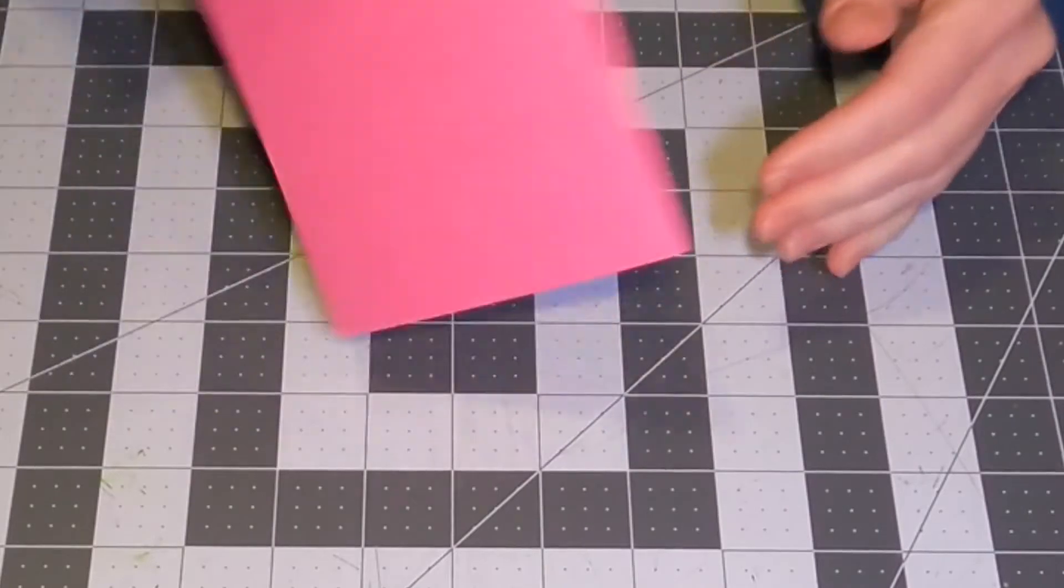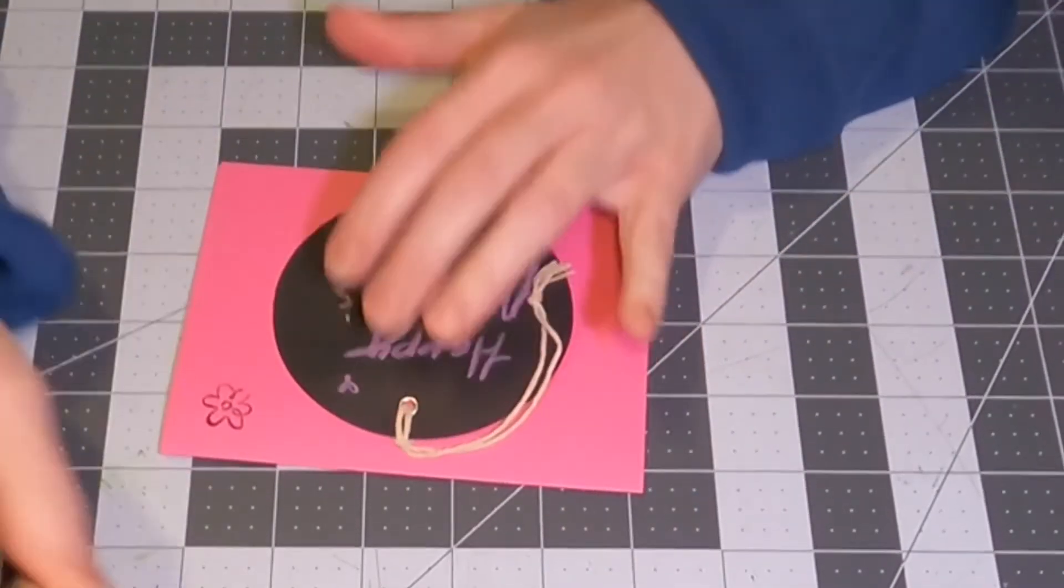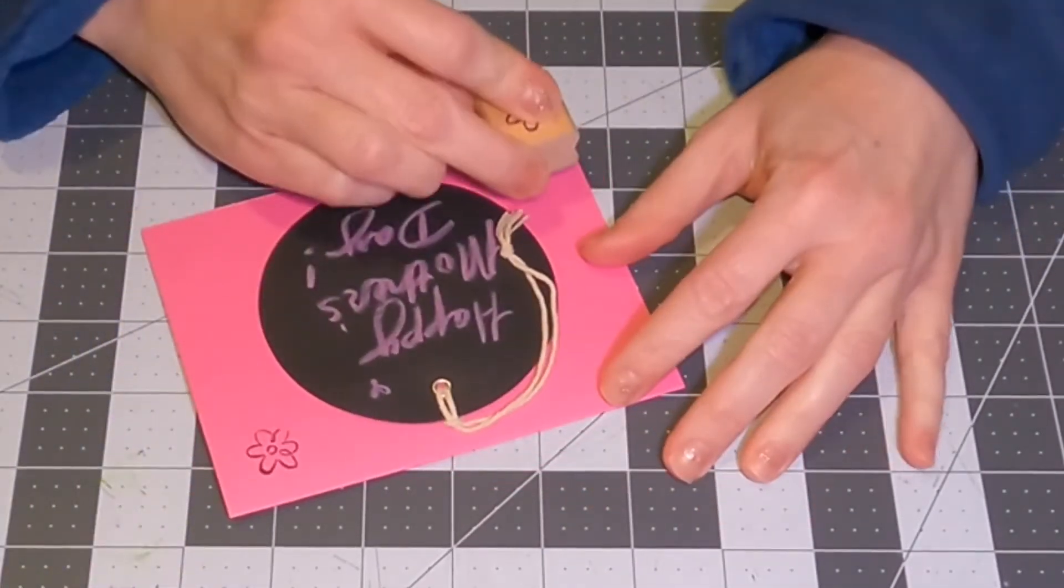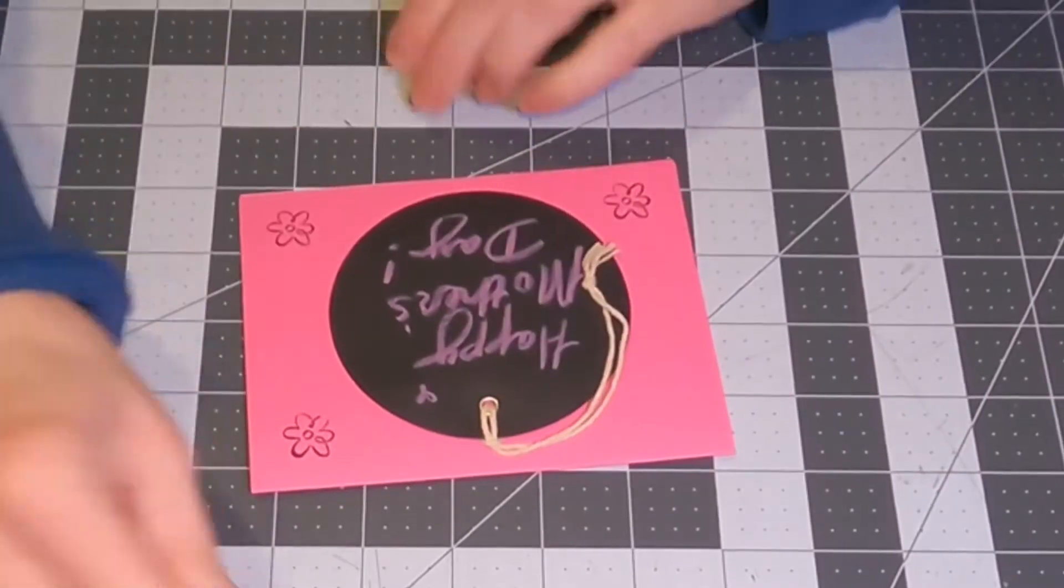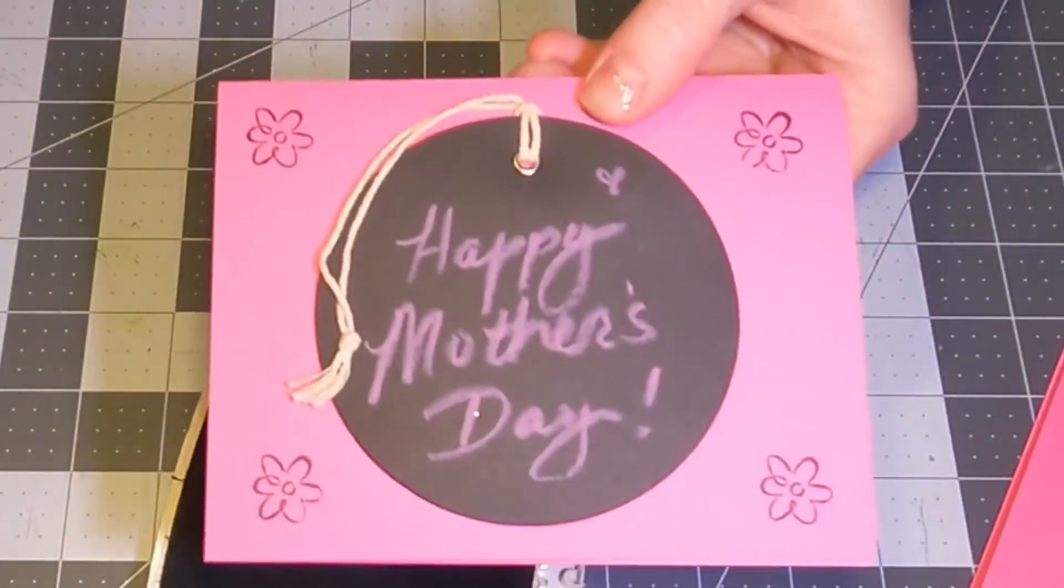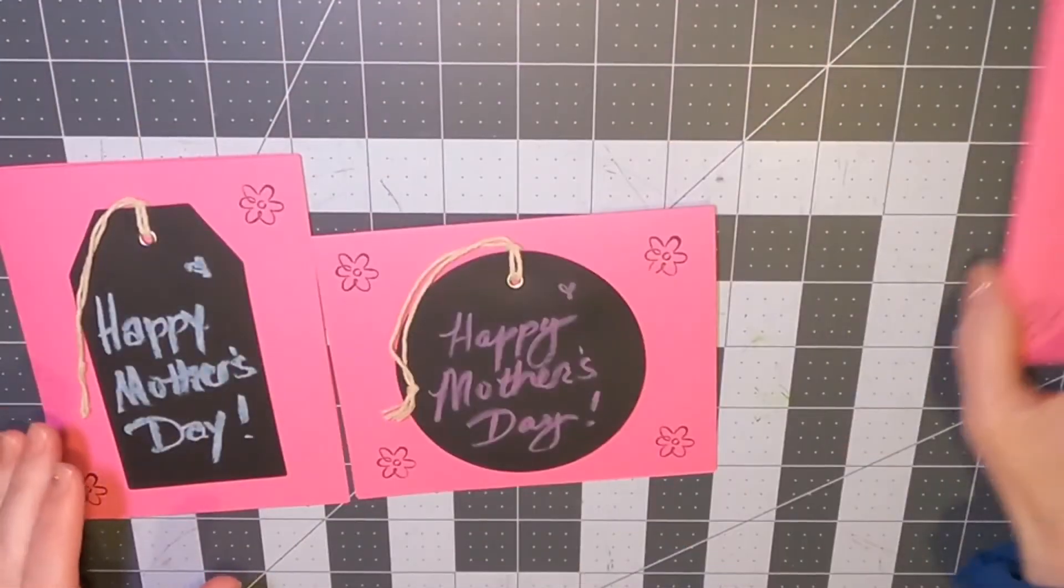And then I'm just centering that, flipping it over and pushing down. Again, I'm stamping. If you don't have stamps, you could use stickers or any kind of little embellishments you could find.